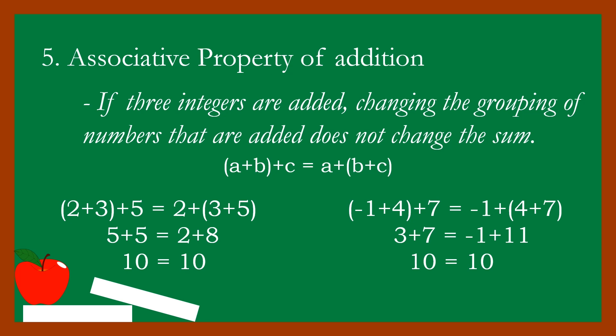Next example: the sum of (negative one plus four) plus seven is equal to negative one plus the sum of (four plus seven). Simplifying: negative one plus four equals three, and three plus seven equals ten. On the other side, four plus seven equals eleven, and eleven plus negative one equals positive ten. Even with different groupings, the result is the same.